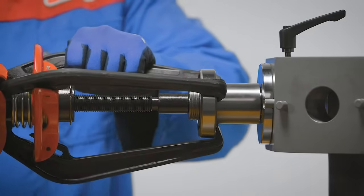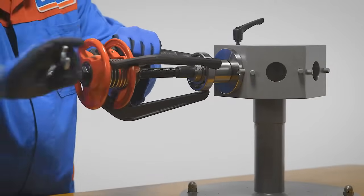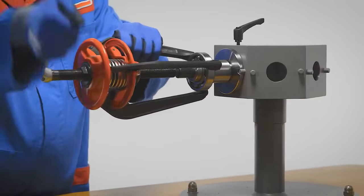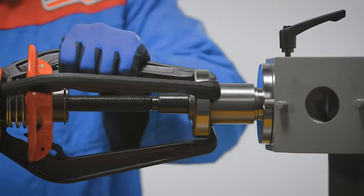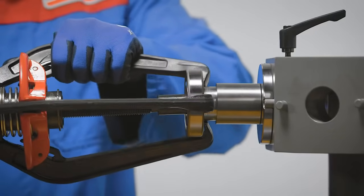For this application, a jaw-type puller can be used. The bearing can be easily dismounted from the shaft with minimum damage to the raceways.